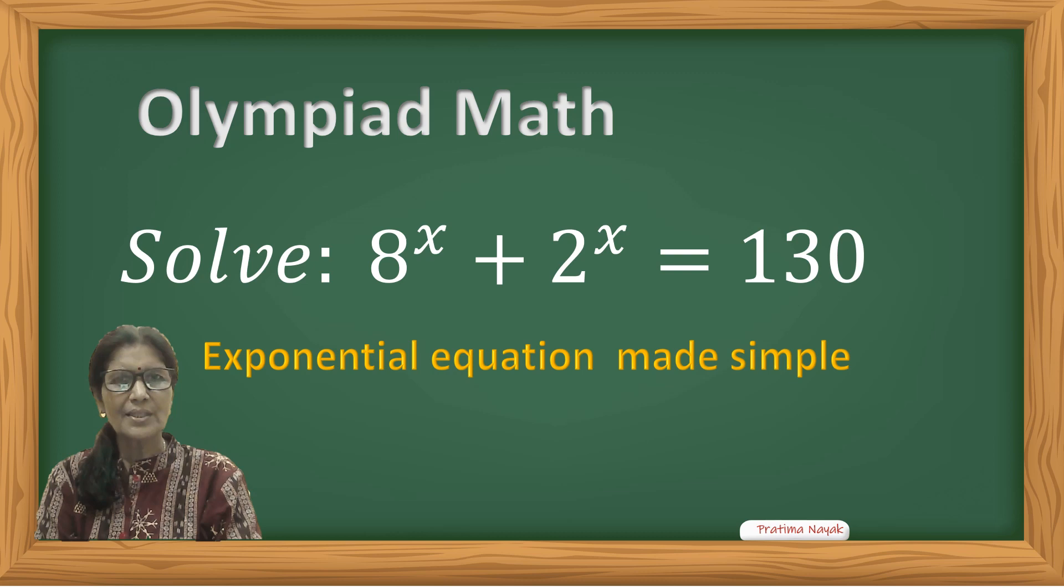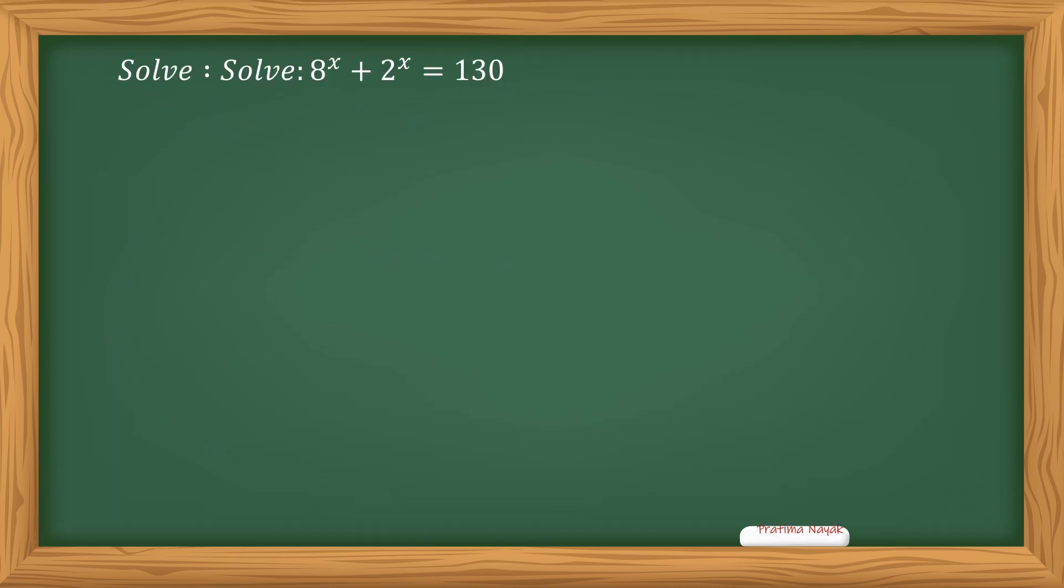Today we will solve an exponential equation as in Olympiad maths. The question is 8 raised to the power x plus 2 raised to the power x equals 130. We will make it simple and solve it. Let us check.